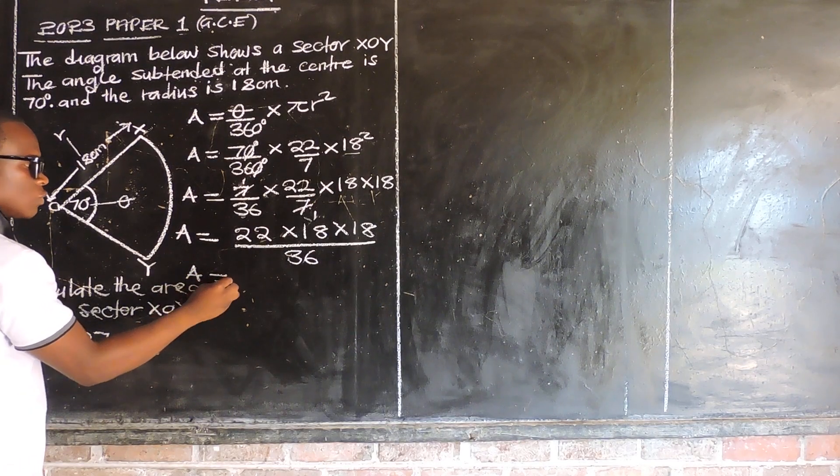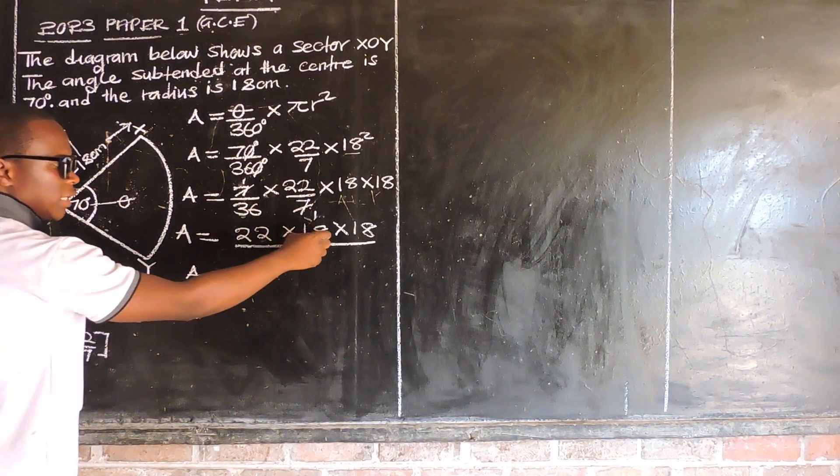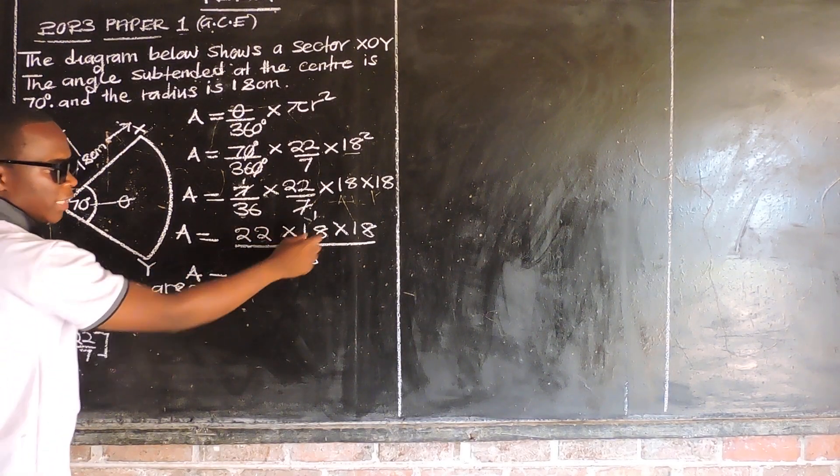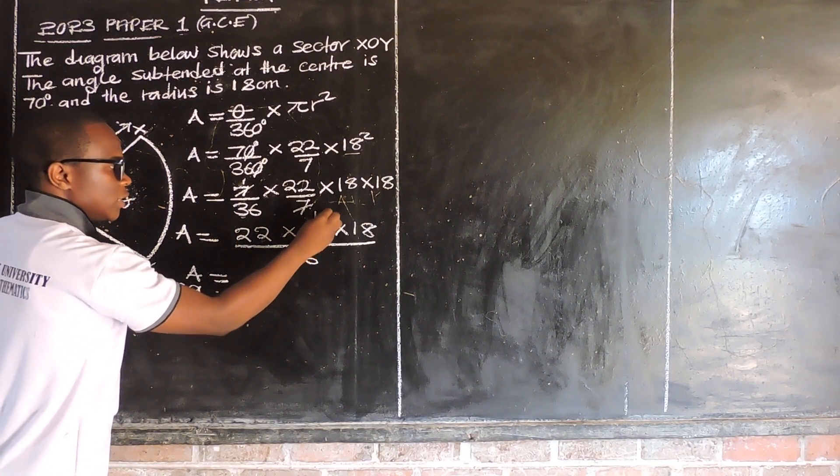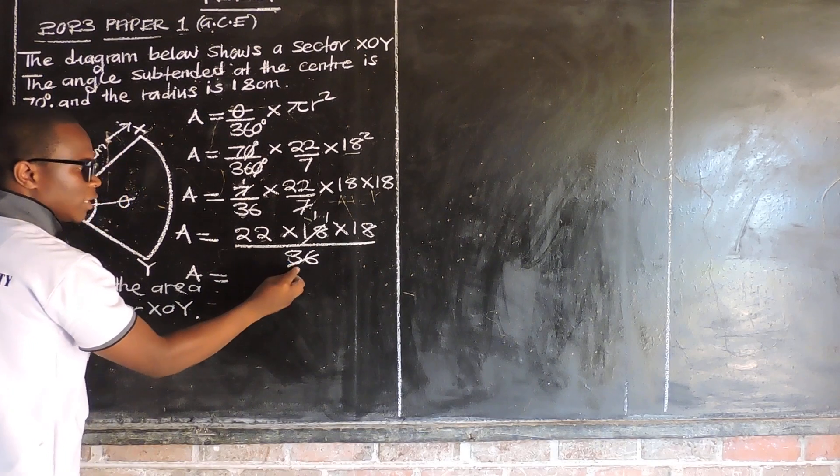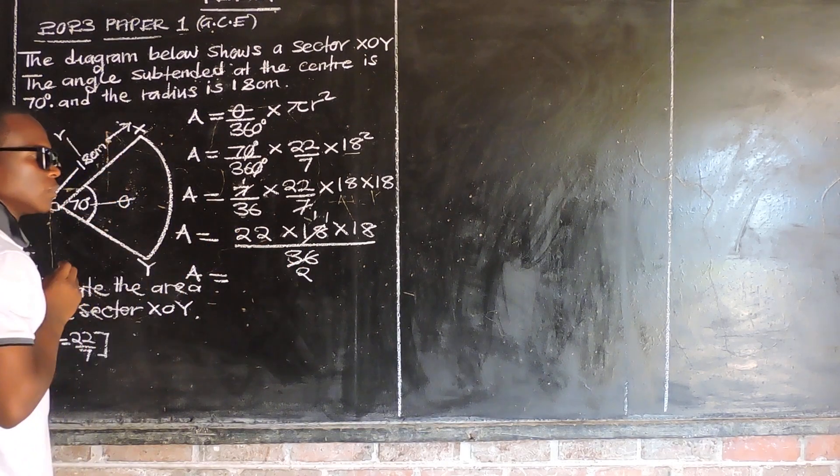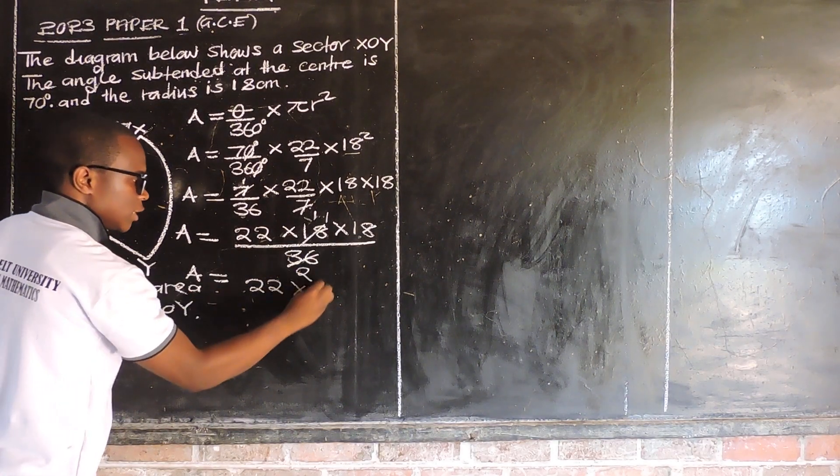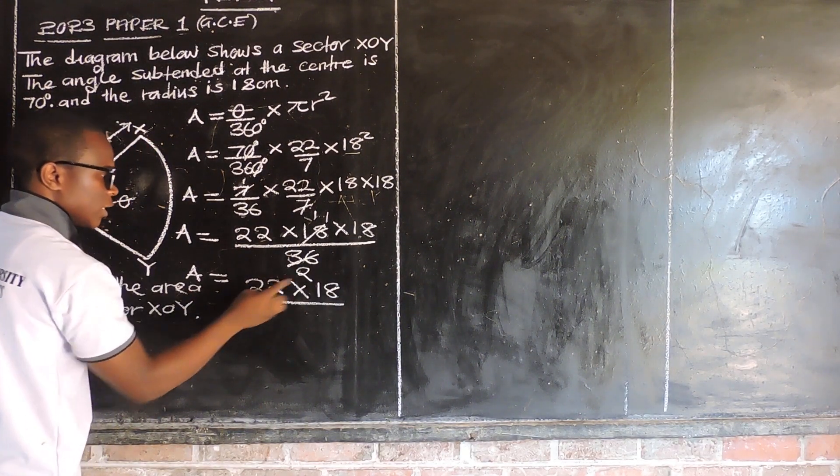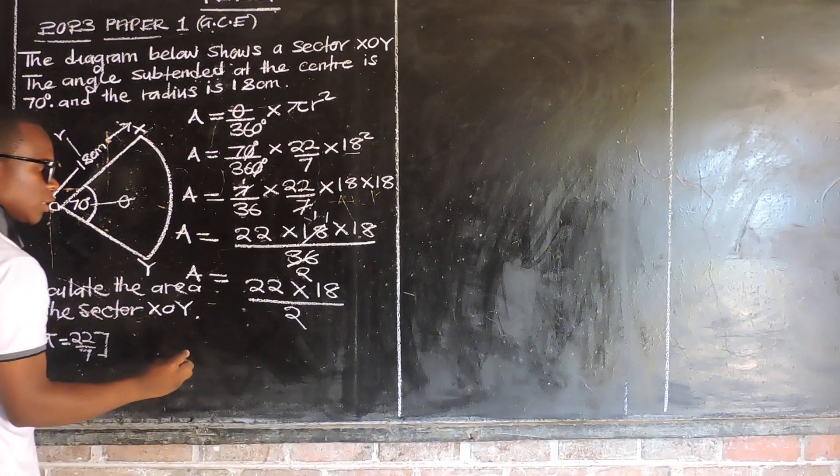Then you say area is equal to... We know 18 is a factor of 36, meaning 18 can go into 36 without remainder. So 18 into 18 is 1, 18 into 36, you get 2. So what are we remaining with? We have 22 multiplied by 18 over 2.